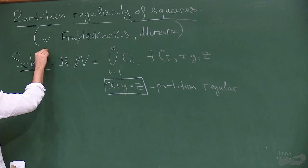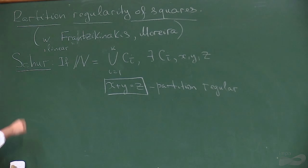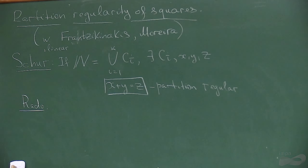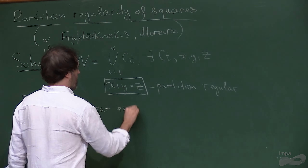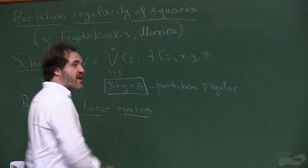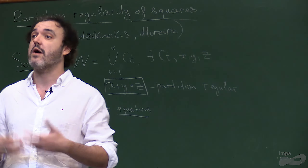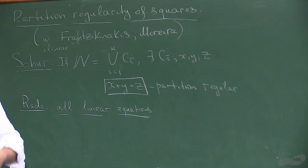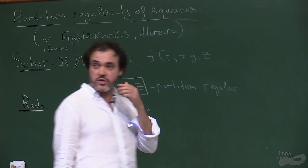This is an example of a linear equation which is partition regular. In the linear case, by about the mid-20th century, Rado essentially dealt with all linear equations and all systems of linear equations, completely classifying when linear equations are partition regular. There is also van der Waerden's famous theorem — no matter how you color integers, you can find arbitrarily long arithmetic progressions of one color — and Szemerédi's theorem, which is the density version. But linear equations are understood, so what I want to talk about today is the nonlinear case.